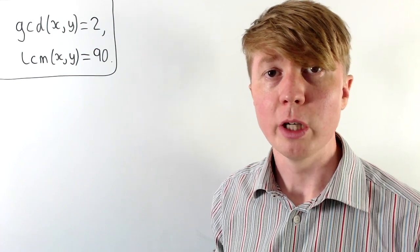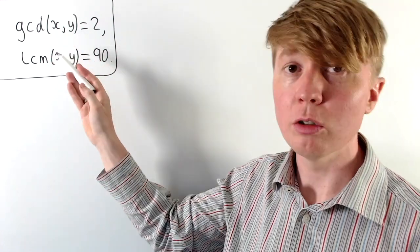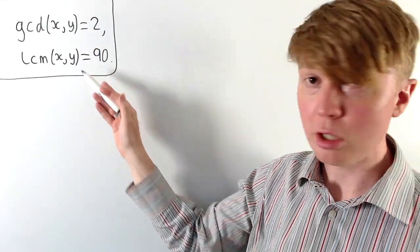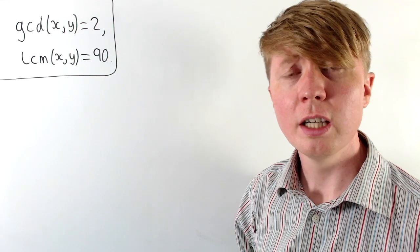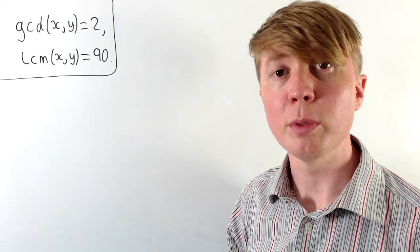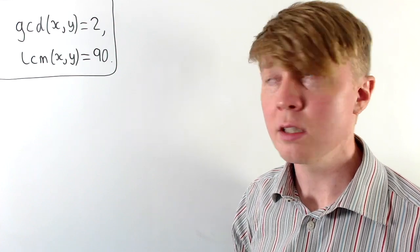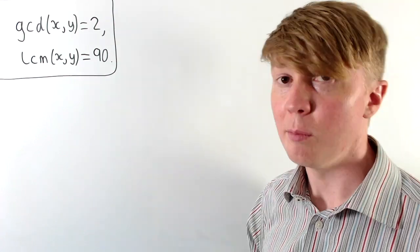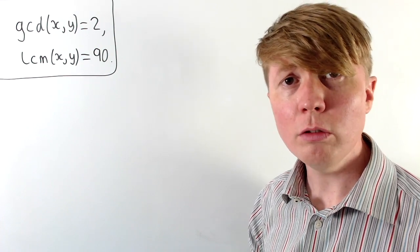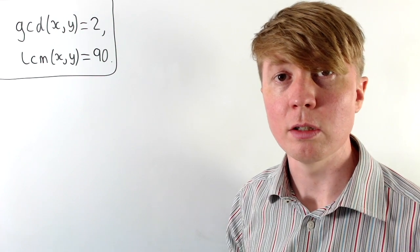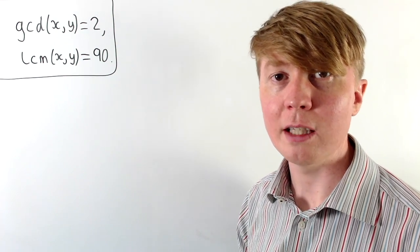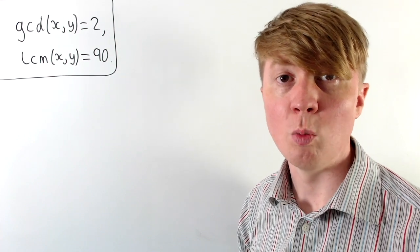We're going to look at problems where you're given the greatest common divisor, also known as the highest common factor, of two integers, and also the lowest common multiple of two integers. We're interested in how many solutions there are to this sort of problem. We'll start with a specific example using 2 and 90, then build up to the more general case, considering only positive integer solutions.